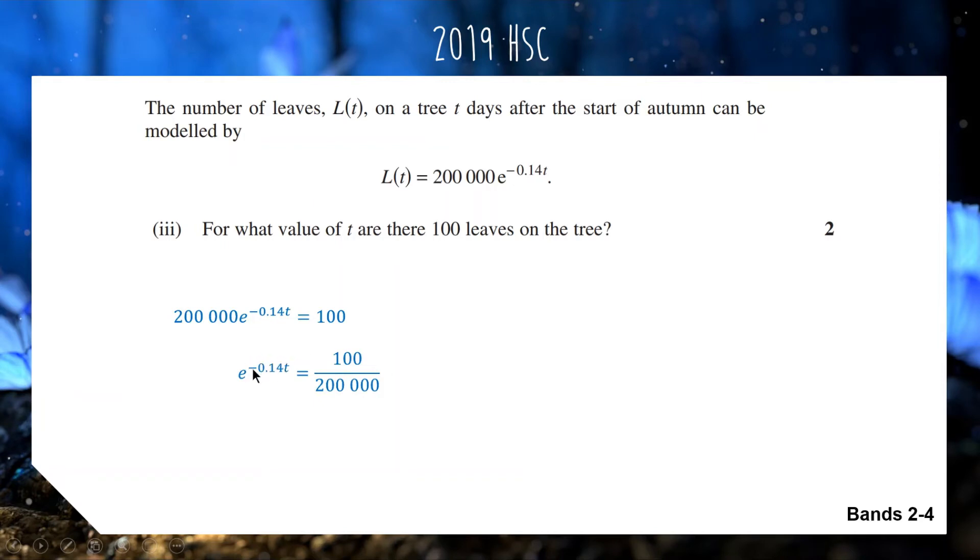First we'll divide both sides by 200,000 to get e to the negative 0.14t equals 100 over 200,000. Now we'll get the exponent out of the power of e by taking ln of both sides. On the left hand side, ln and e cancel out leaving us with negative 0.14t. On the right, we simplify to 1 over 2000. To get t, we divide by negative 0.14 on both sides. Put this through the calculator and we get our final answer of 54.3 days. Anything around 54.3 will get you 2 marks for this band 4 question.